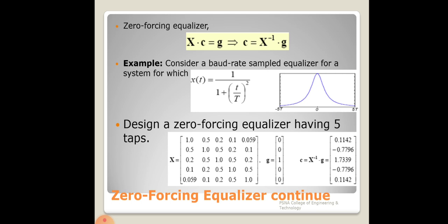A bordered sampled equalizer example: x(t) is selected to show a specific response where x·c = g, so c = x^(−1)·g. The zero-forcing equalizer uses five taps, with x as the input, g as the matrix, and c = x^(−1)·g representing the equalizer solution.